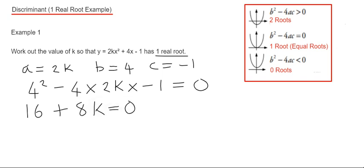So if we solve this equation, if we take 16 from both sides we get 8k equals minus 16, and then divide by 8, and that will give us k is equal to minus 2.